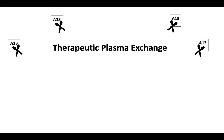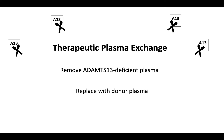The most efficient way to restore ADAMTS-13 activity levels is using an apheresis procedure known as therapeutic plasma exchange. Therapeutic plasma exchange works to remove ADAMTS-13 deficient plasma and replace it with donor plasma. When treated with therapeutic plasma exchange, greater than 80% of patients recover. In congenital TTP, however, plasma infusion alone may be sufficient.